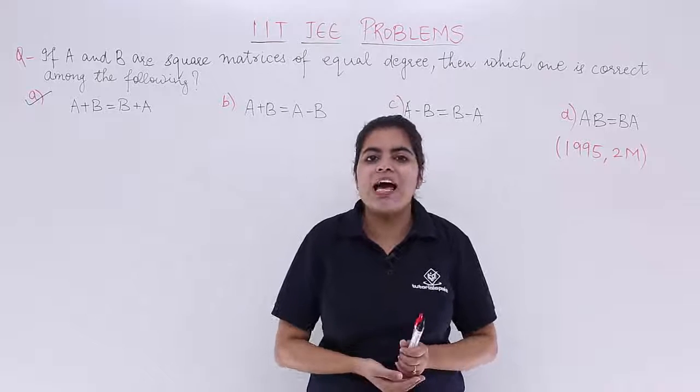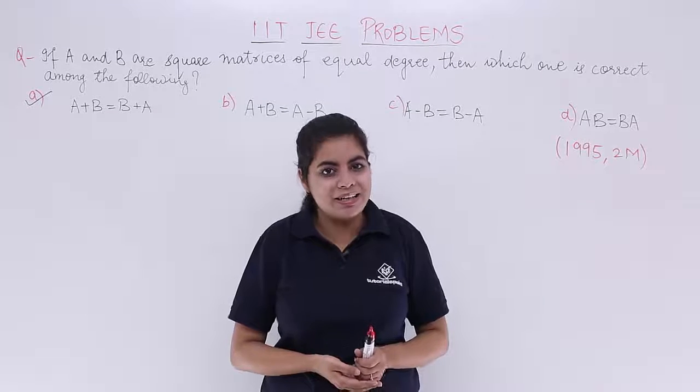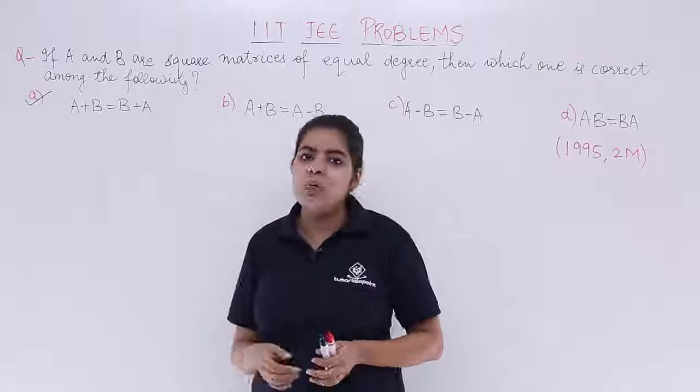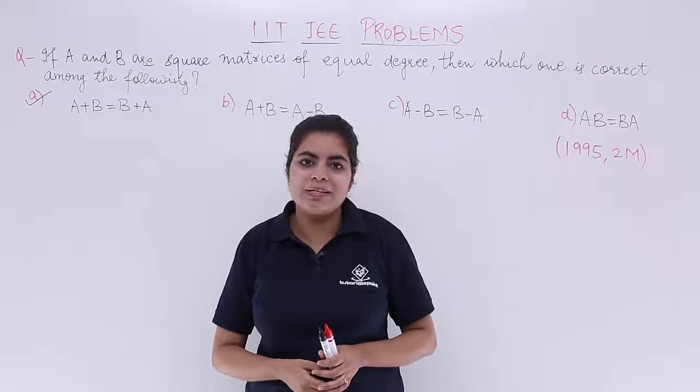So the answer to this IIT JEE problem which was asked in the year 1995 for two marks is option A, which is A+B = B+A.